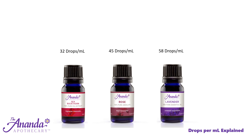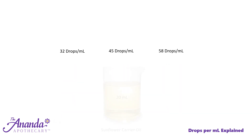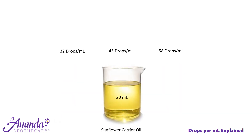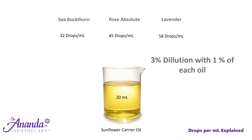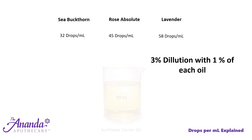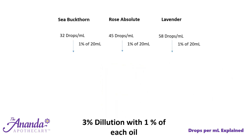So here we have sea buckthorn, rose, and lavender, and you can see the drops for each one of them is correlated above. If we wanted to dilute this in a 20 milliliter sunflower carrier oil using a 3% dilution, we would want 1% of each oil to be contributing to the blend. So 1% of 20 milliliters is 0.2 milliliters.